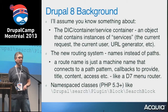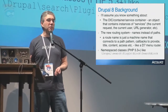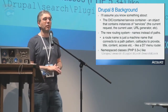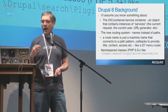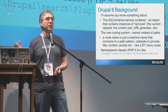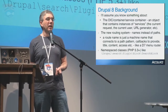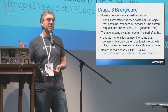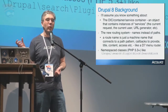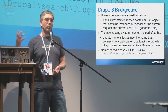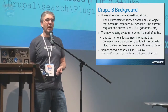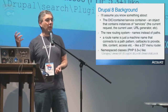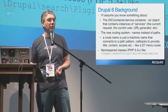Drupal 8 is shifting to use concepts and code brought over from Symfony, including a new routing system. We're using routes that are based on names and not on system paths. In Drupal 6 and 7, the system path is the canonical thing — there's one page callback that corresponds to a system path. In Drupal 8, it's really a mapping from a machine name to a page callback, which gives greater flexibility.